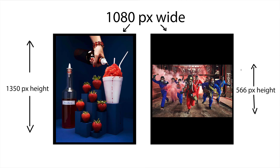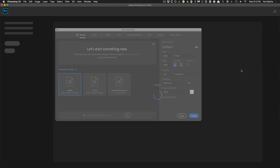On Instagram, you're able to post images that are 1080 pixels wide. The maximum height you can go with is 1350, with the minimum height being 566 pixels. We're going to need to keep that in mind when we make our layout in Photoshop.